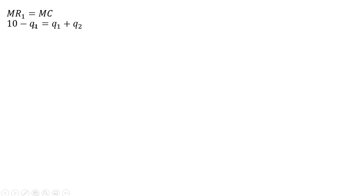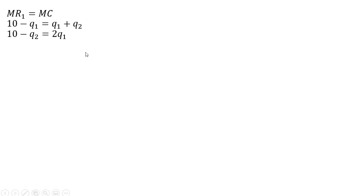Now we're going to set marginal revenue equal to marginal cost in each market. The marginal revenue in market one, set it equal to marginal cost, and let's solve for Q subscript one. Subtracting Q subscript two from both sides and adding Q subscript one to both sides, and now dividing through by two, we have this equation.